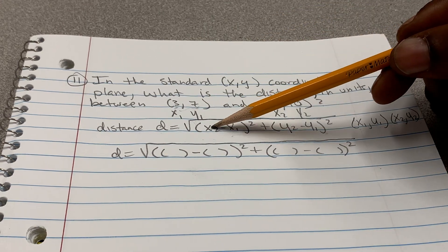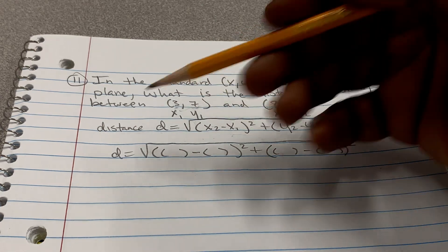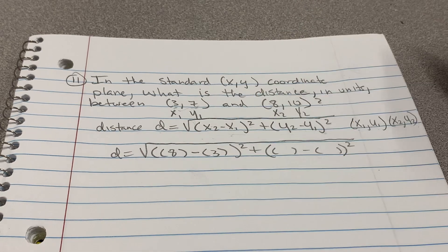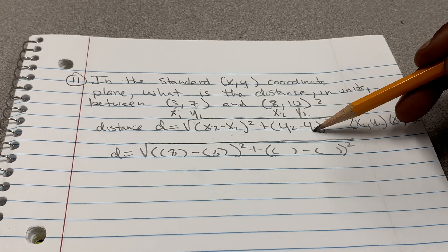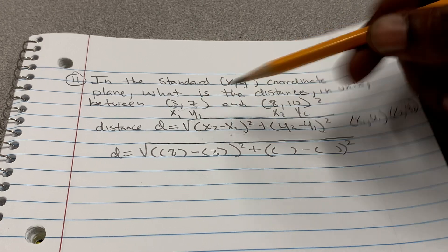Now that we have that, we can see x2 minus x1. So x2 is 8, x1 is 3. So this is going to be 8 minus 3. Now, y2 minus y1, y2 is 10, y1 is 7. So, 10 minus 7.